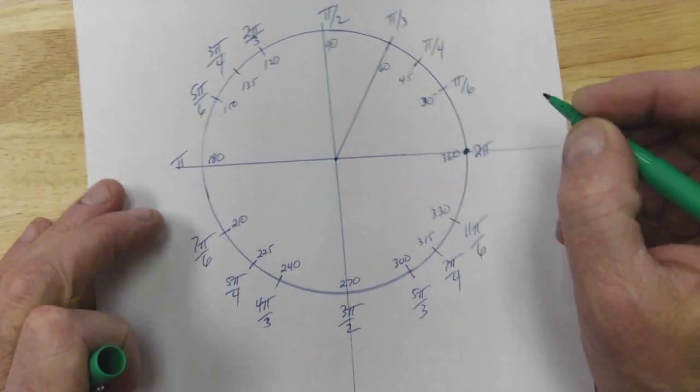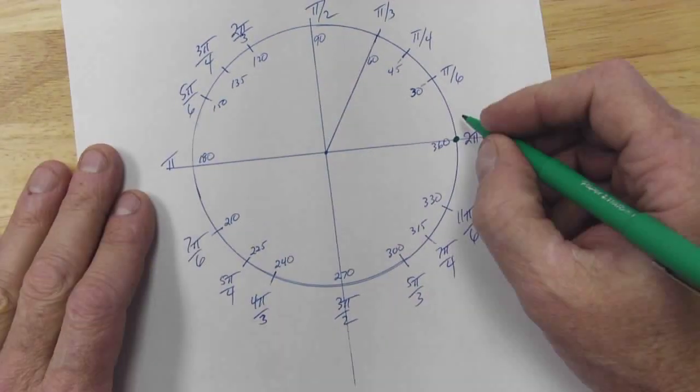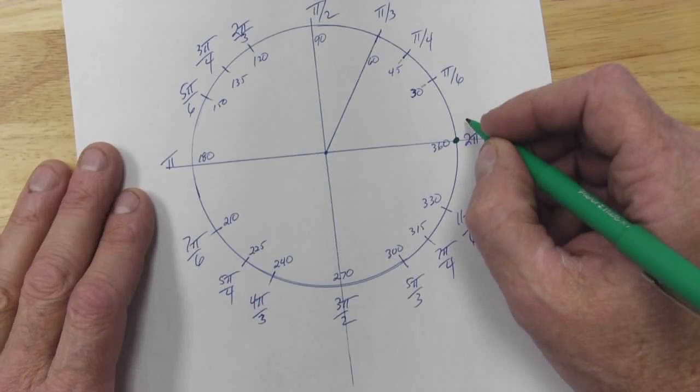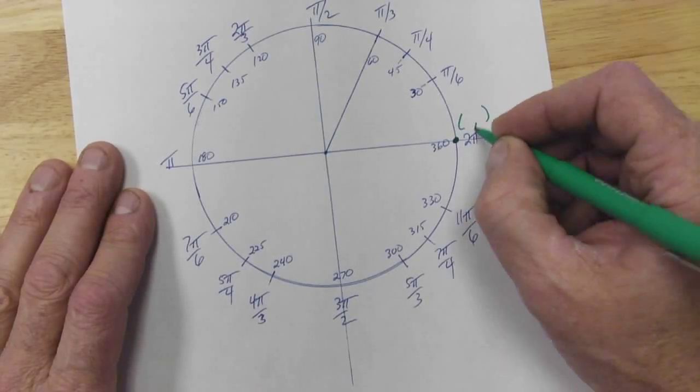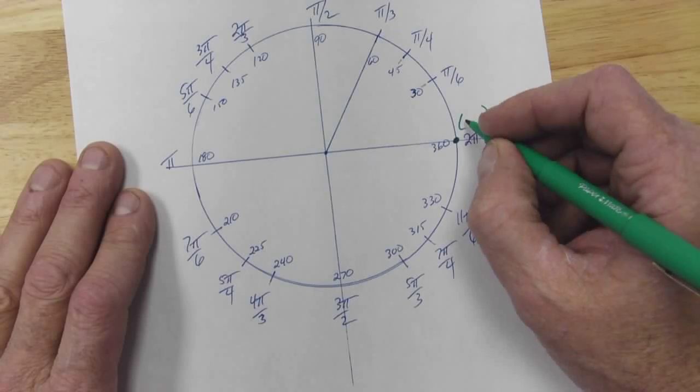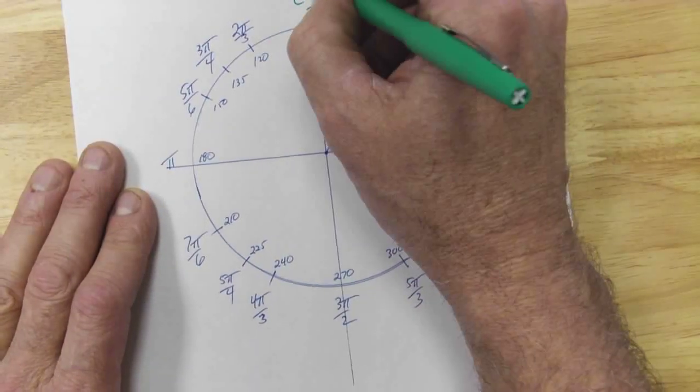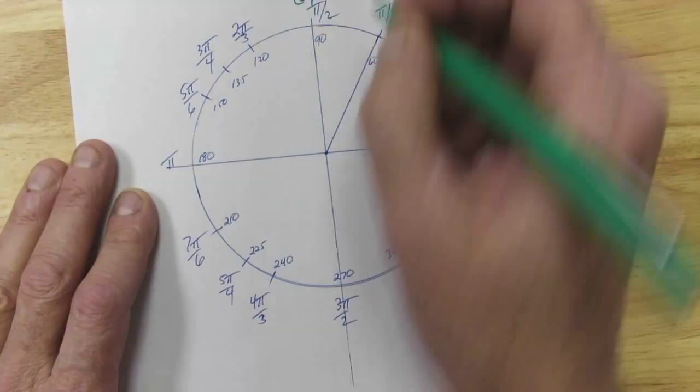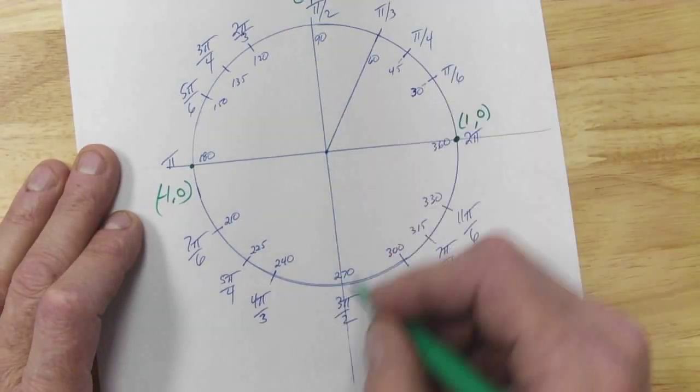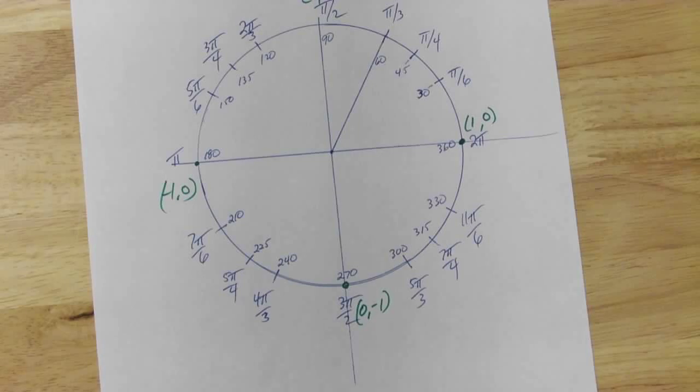Okay, if we assign coordinates to that point, a unit circle. Help me out, we're going to go clockwise. What would this first one be? Come on, we did this yesterday. What would my coordinates be? Oh, 0. Oh. 1, 0. Okay, 1, 0. Next one. 0, 1. Next one. Negative 1, 0. Next one here. 0, negative 1. Okay.